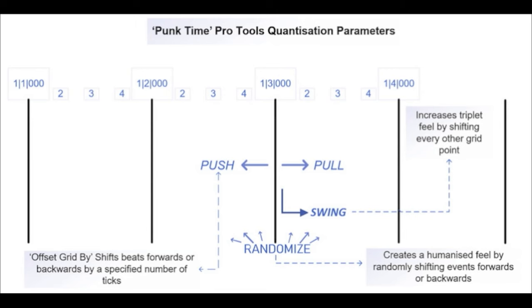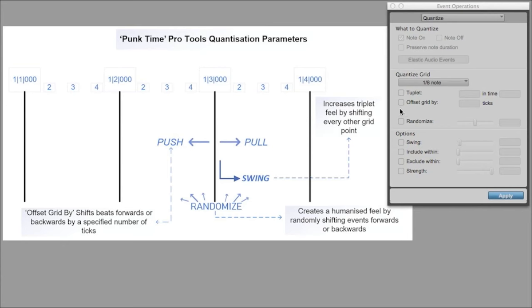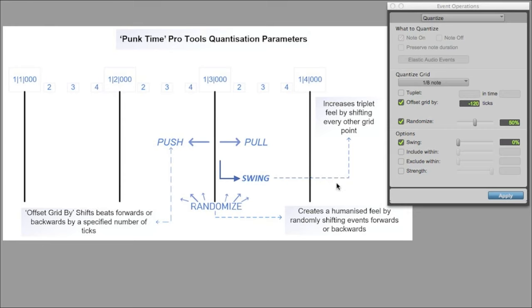The process of applying the method is best described by looking at the precise way groove is created using quantisation to create micro-timing deviations. The offset grid-by parameter shifts beats forwards or backwards by a specified number of ticks. The sensation of rushing ahead was shown to be a key characteristic of punk rock; therefore, offsetting events negatively achieves the push feel, whereas a pulled or dragging sensation can be achieved by offsetting beats positively. The swing function enhances the triplet feel by shifting events at every other grid point, with 12% achieving a light swing feel, 24% producing a tighter swing-like groove, and 50% to 75% creating a true triplet-like swing feel. Timing inconsistencies were prominent in punk rock drum fills, hi-hats and guitar performances. The randomised function emulates these irregularities by randomly shifting events either forwards or backwards by the specified percentage value. Now let's see how the Punk Time Method applies these parameters to reflect the unique metabolism of punk rock bands.